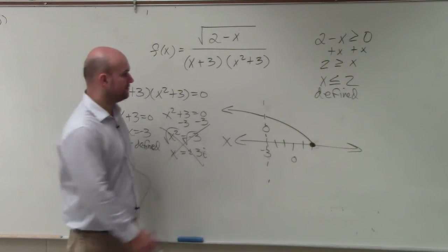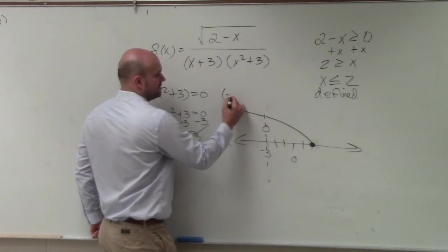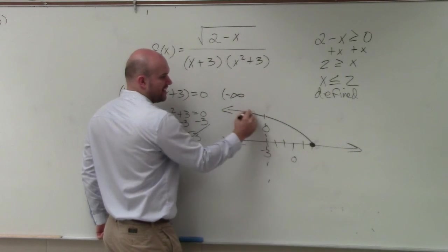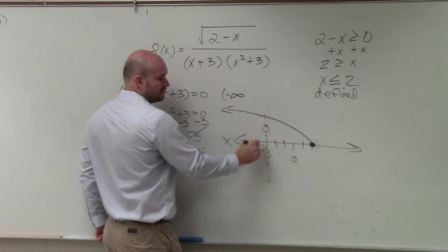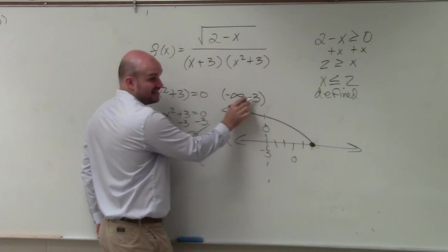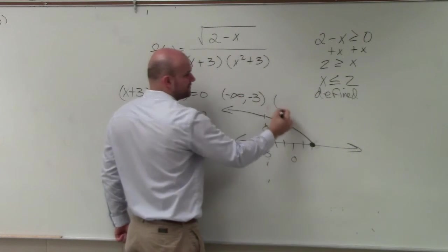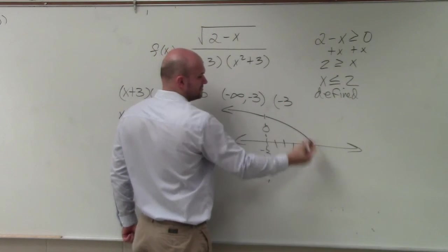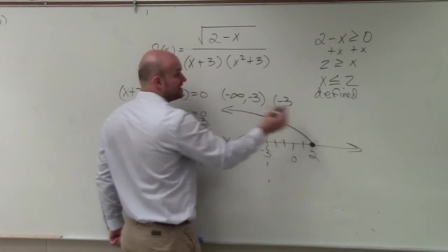So how do we write our domain? Well, our domain is going to look like this. Negative infinity all the way to how far? Negative 3. Doesn't, can't equal negative 3, so we have to use parentheses. And then from negative 3 to how far? Sorry, positive 2, right?